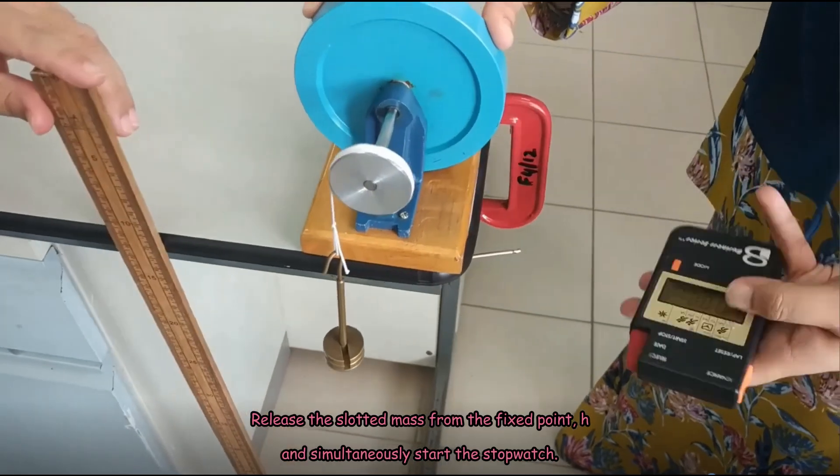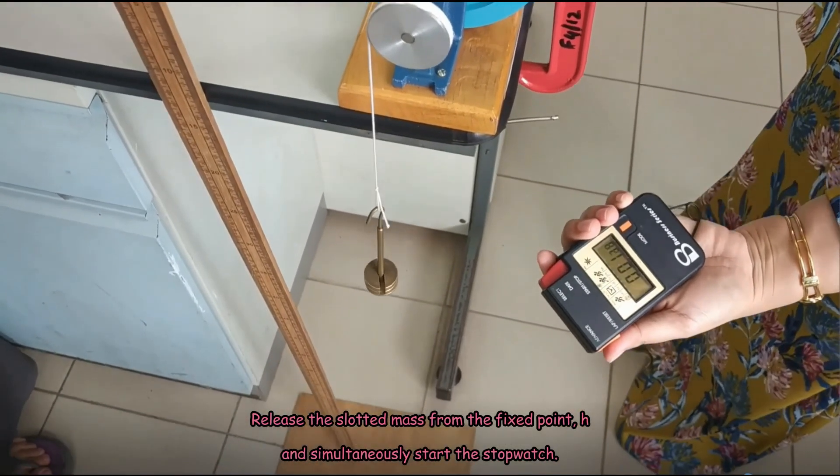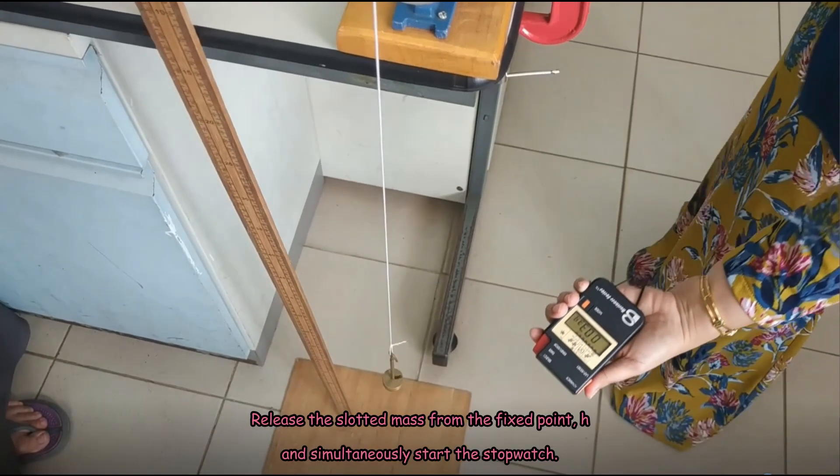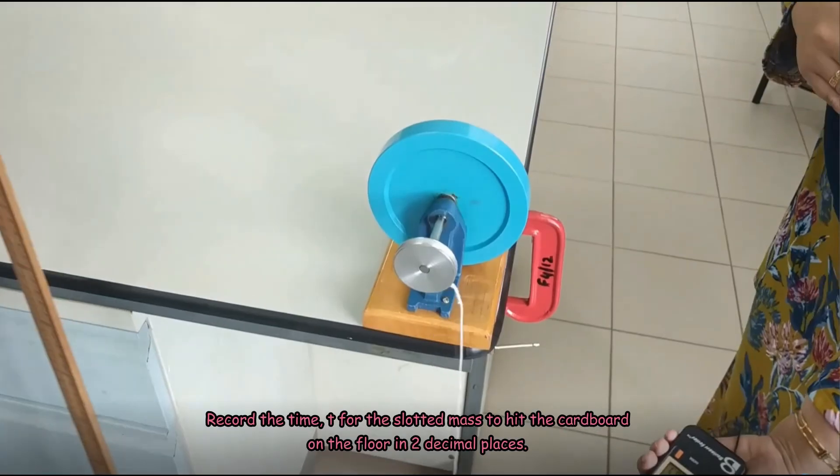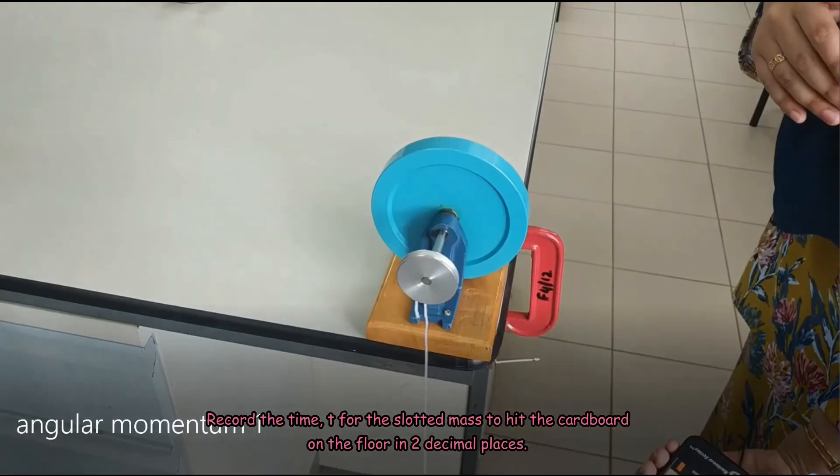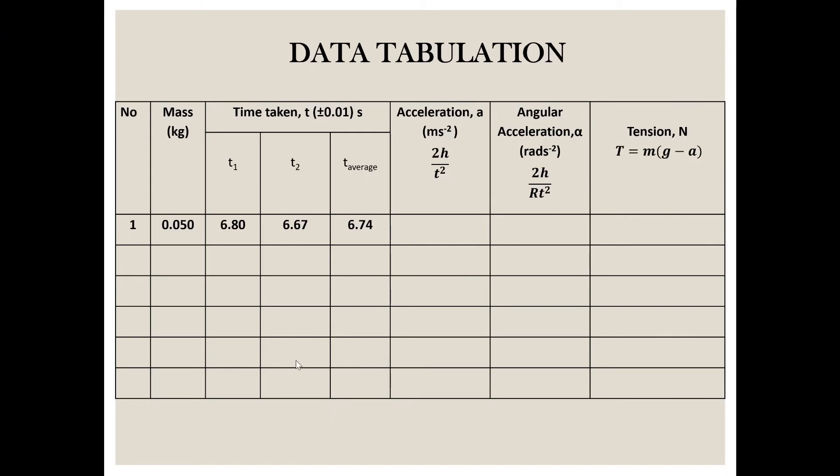Release the slotted mass from the fixed point h and simultaneously start the stopwatch. Record the time t for the slotted mass to hit the cardboard on the floor in two decimal places. Make sure to repeat the procedure two times to obtain the average value of time.